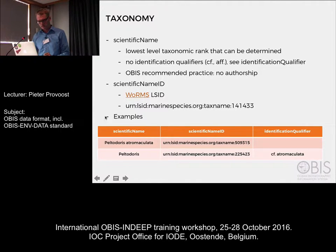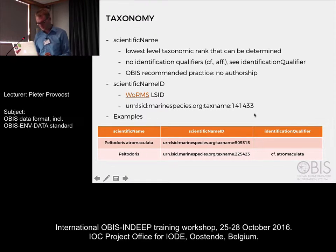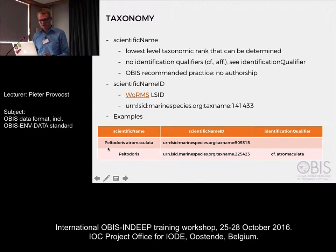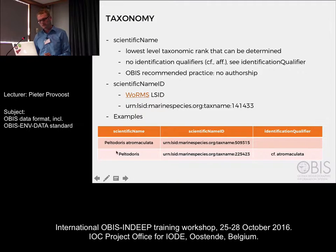Some examples: if you have identification at species level, you put the species name in scientific name and the species ID in scientific name ID with no qualifier. If you're not sure at species level, you put the genus name in scientific name and the genus ID in scientific name ID.